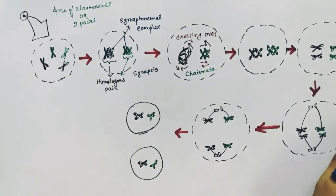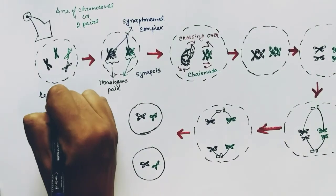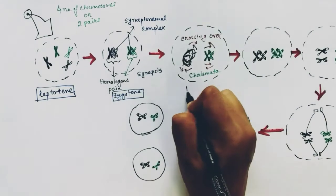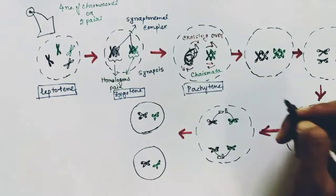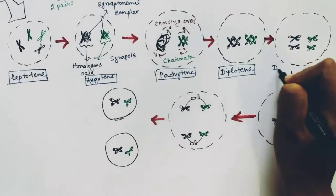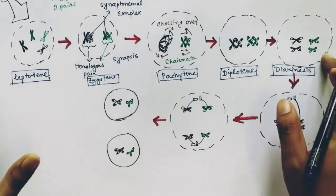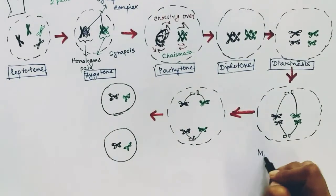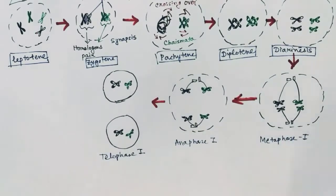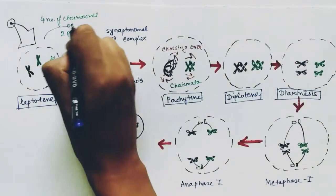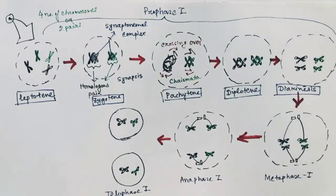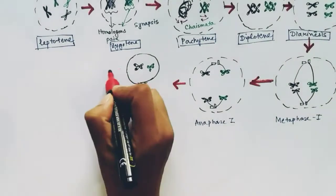Now let's name the stages where these events occur. The first stage is leptotene, followed by zygotene where synapsis of homologous chromosomes occurs. In pachytene, crossing over is the significant event. Next is diplotene where chiasmata is still present, and in diakinesis the chiasmata has terminated. When astral rays connect to chromosomes and pull them to the middle line it is metaphase I, then pulling towards the poles is anaphase I, and forming two cells at the end is telophase I. From leptotene to diakinesis all comes under prophase I.